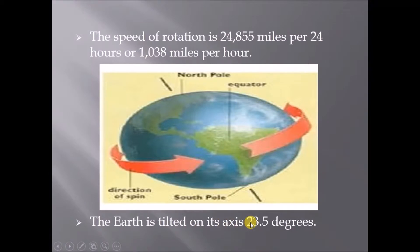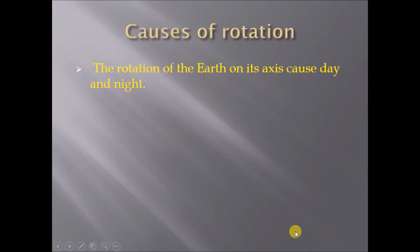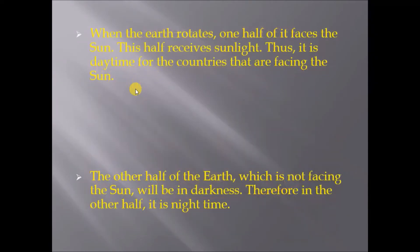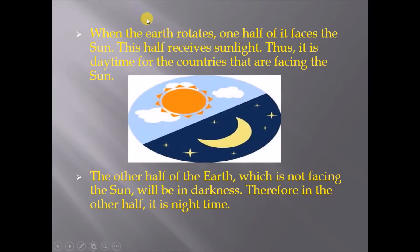Now, what are the causes of rotation? The rotation of the Earth on its axis causes day and night. When Earth rotates, one half of it faces the Sun. This half receives sunlight, thus it is daytime for the countries facing the Sun. The other half of the Earth, which is not facing the Sun, will be in darkness. Therefore, it is nighttime in the other half.